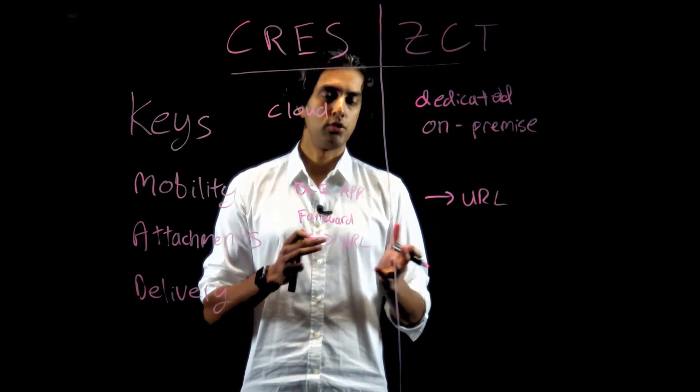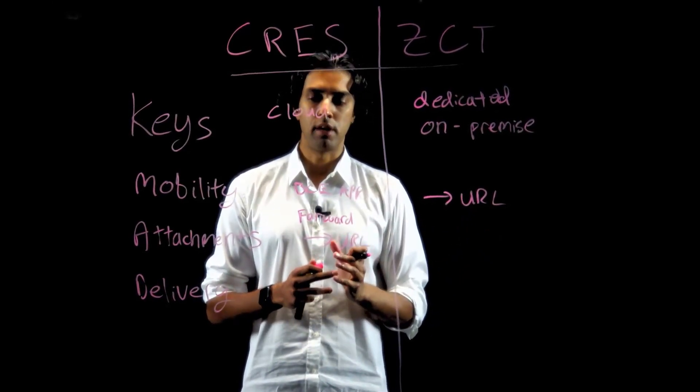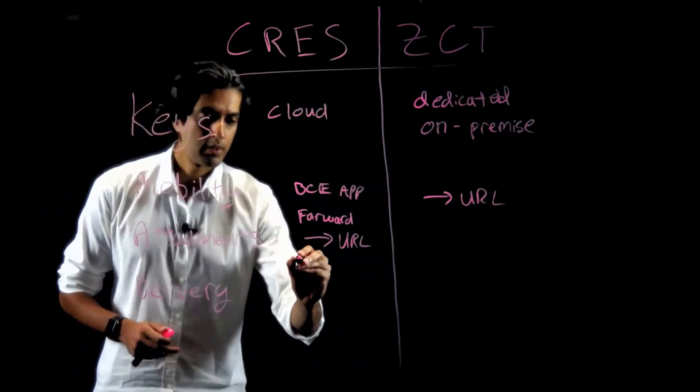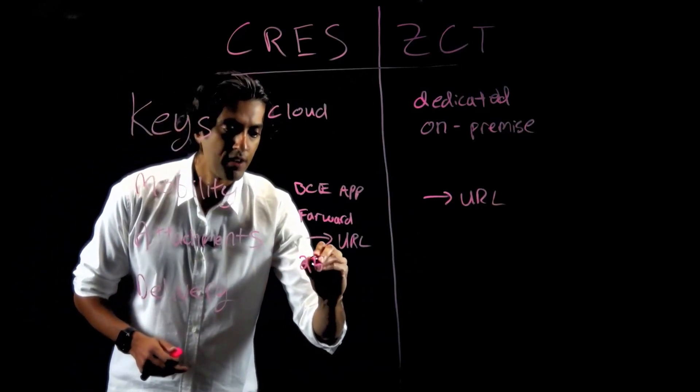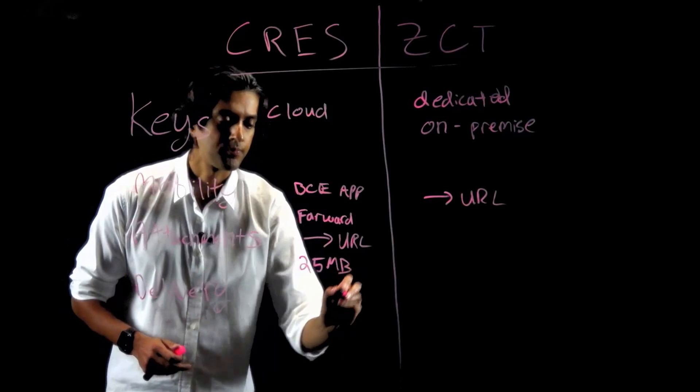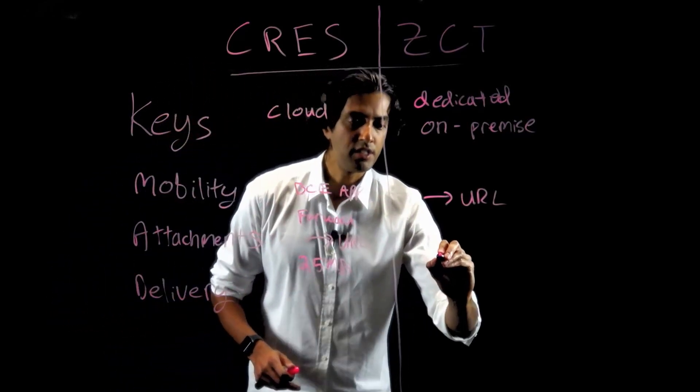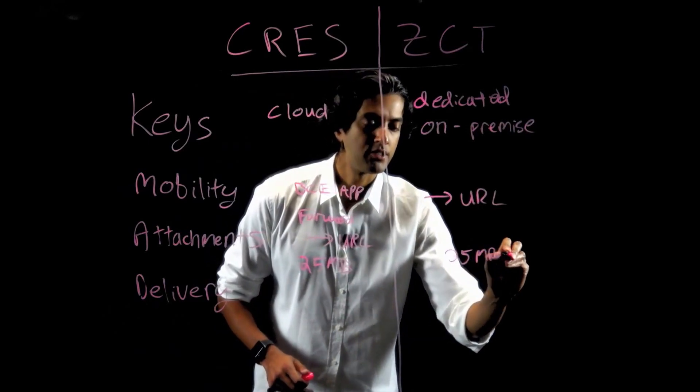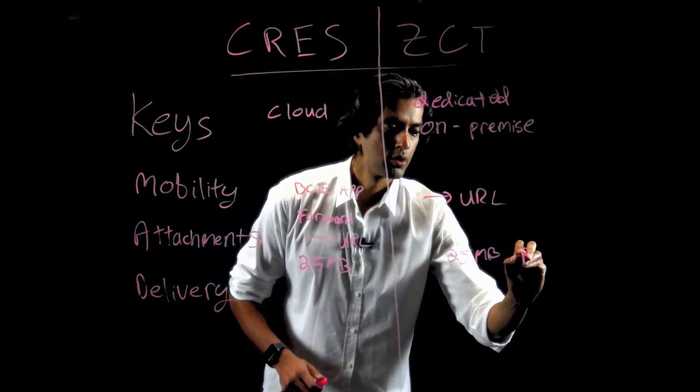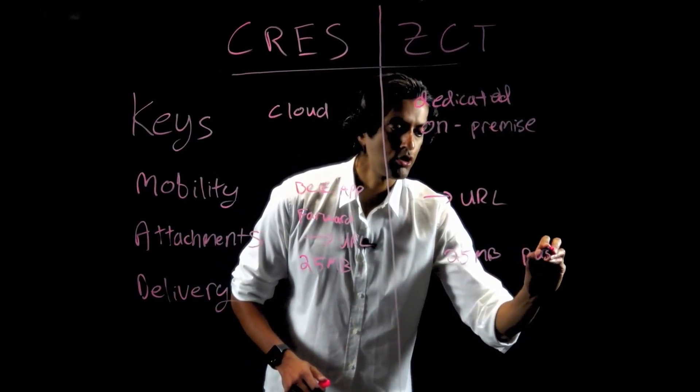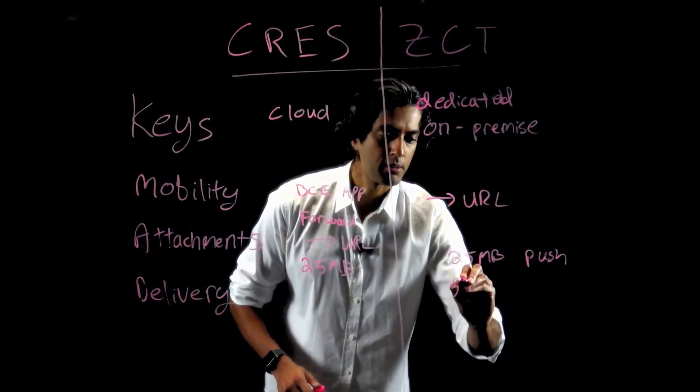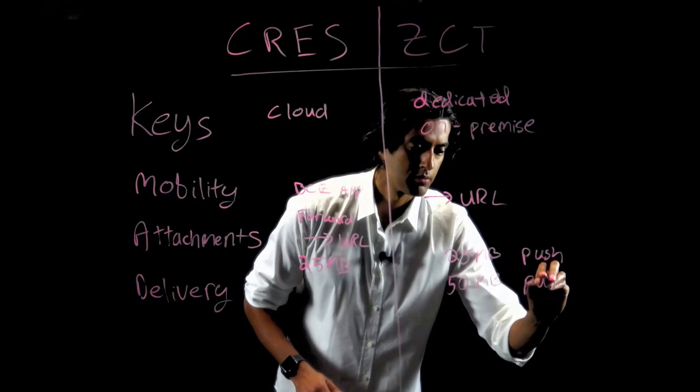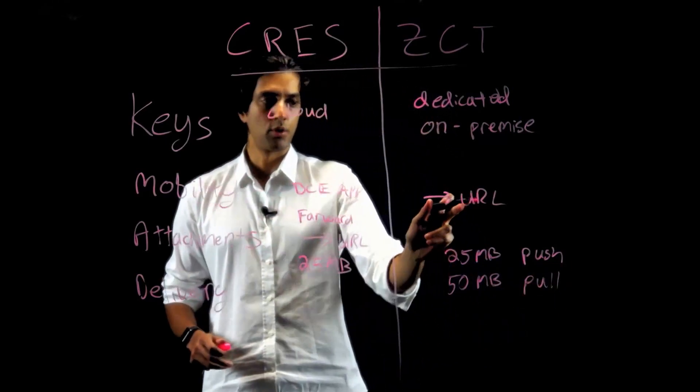In both cases, you're using the native browser on the device. When it comes to attachments, CRES handles messages up to 25 megabytes in size. ZCT handles messages 25 megabytes in size delivered through encrypted push or up to 50 megabytes through the pull portal, which is the URL.